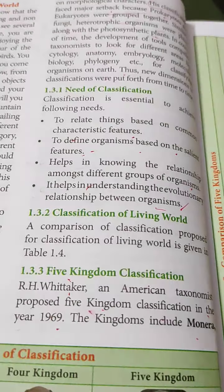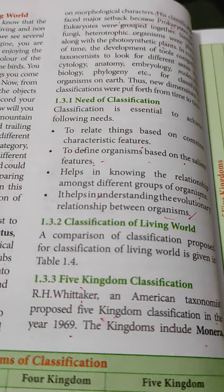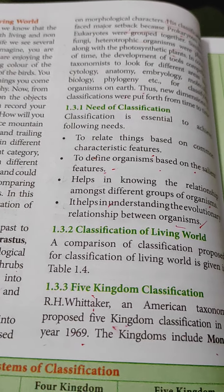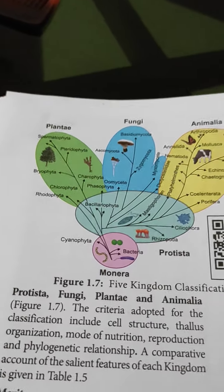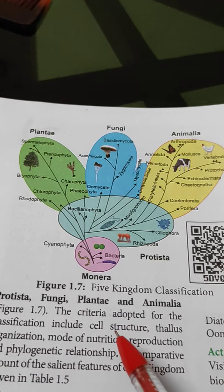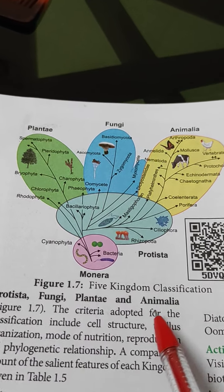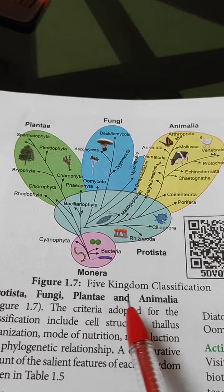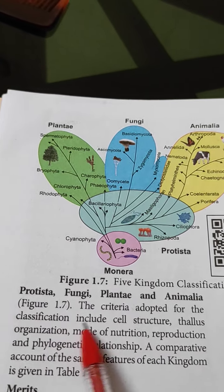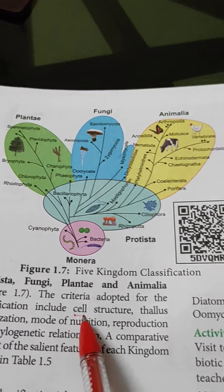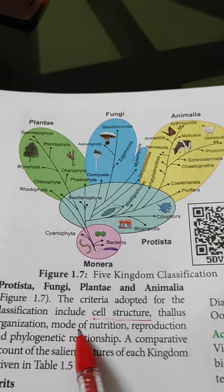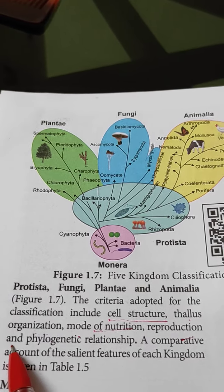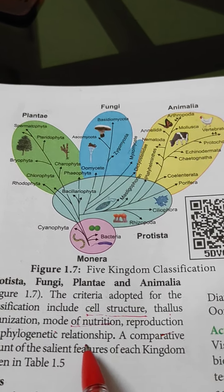The five kingdoms are: Monera, where prokaryotes are included; Protista, which are eukaryotic; Fungi; Plantae; and Animalia. The criteria adopted by Whittaker for classification include cell structure, level of organization, mode of nutrition and reproduction, and phylogenetic relationship.